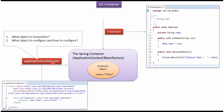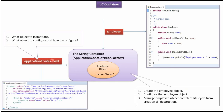This XML defines what object to instantiate and what object to configure and how to configure. In this case we have to create an employee object and the name property should be set as Peter. Spring container reads this XML file, creates the employee object, configures it, and manages the employee object's complete life cycle from creation till destruction.